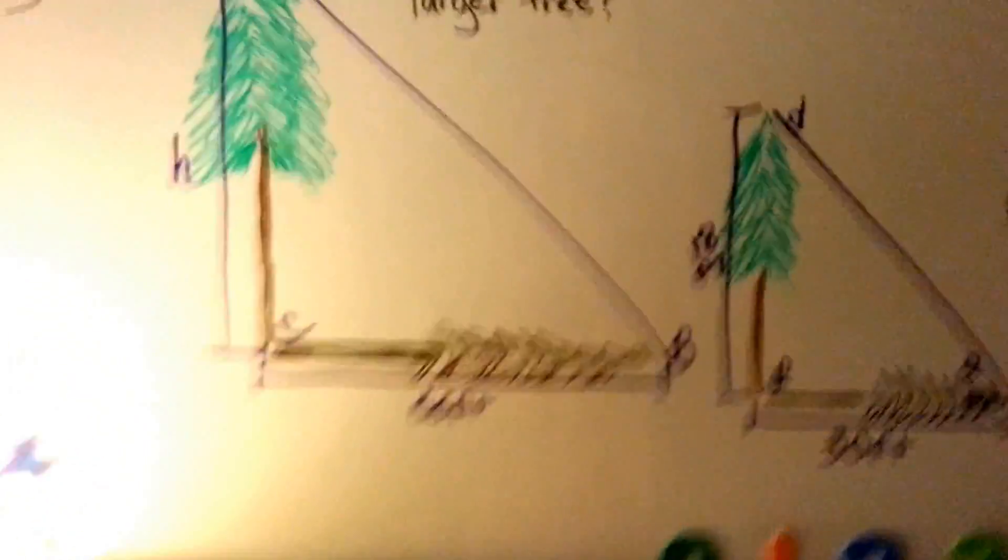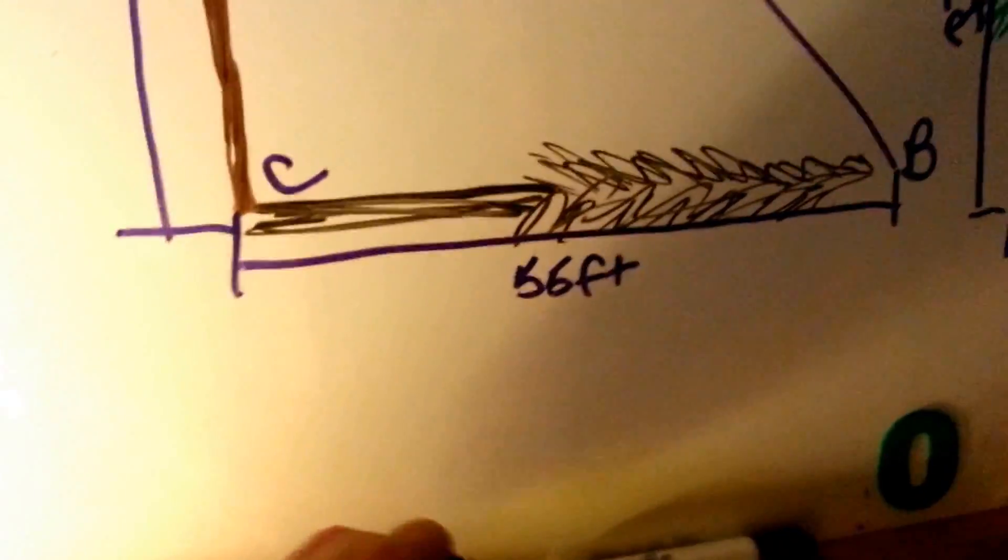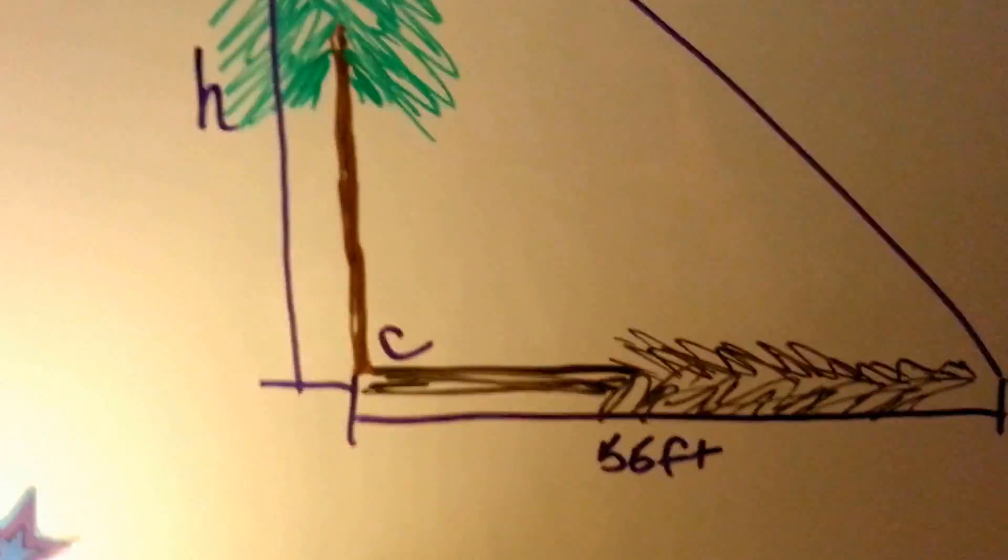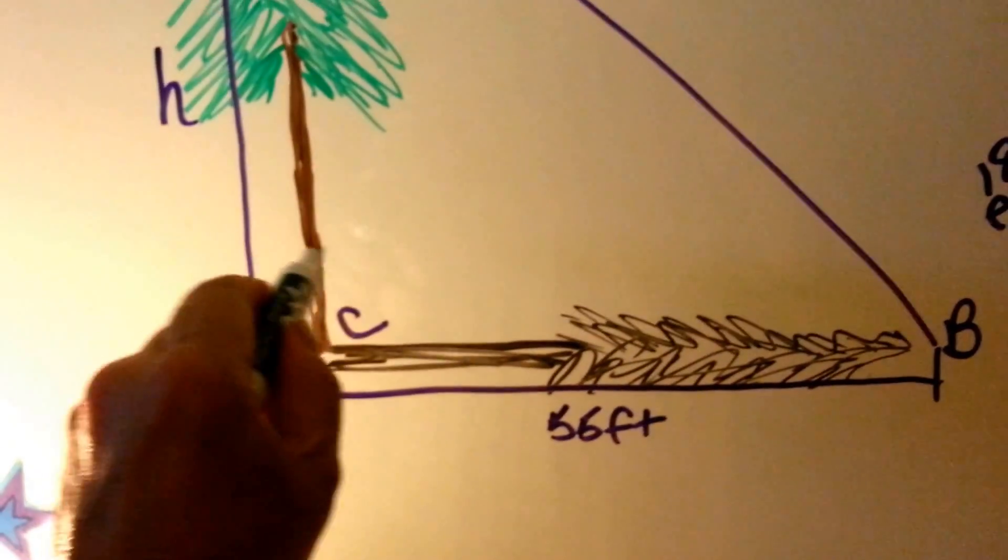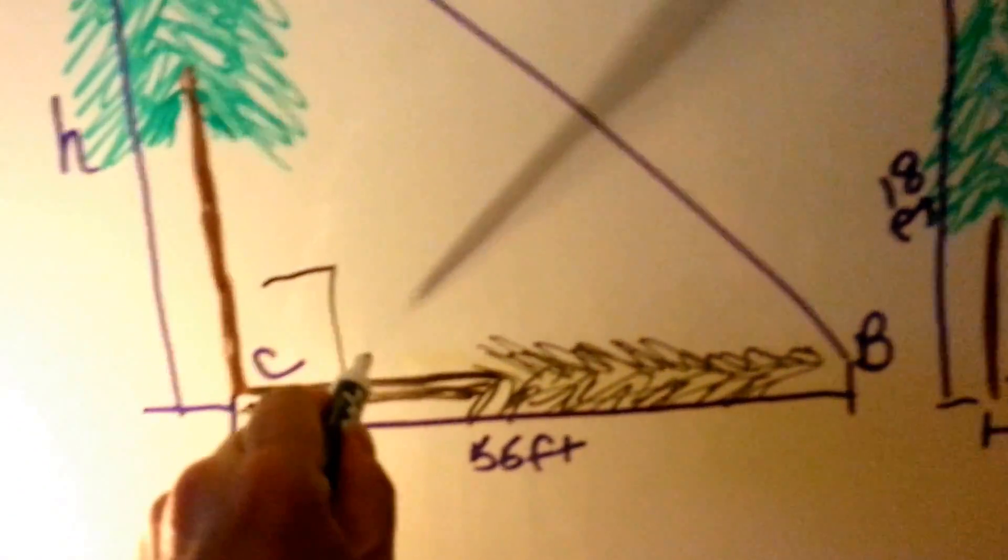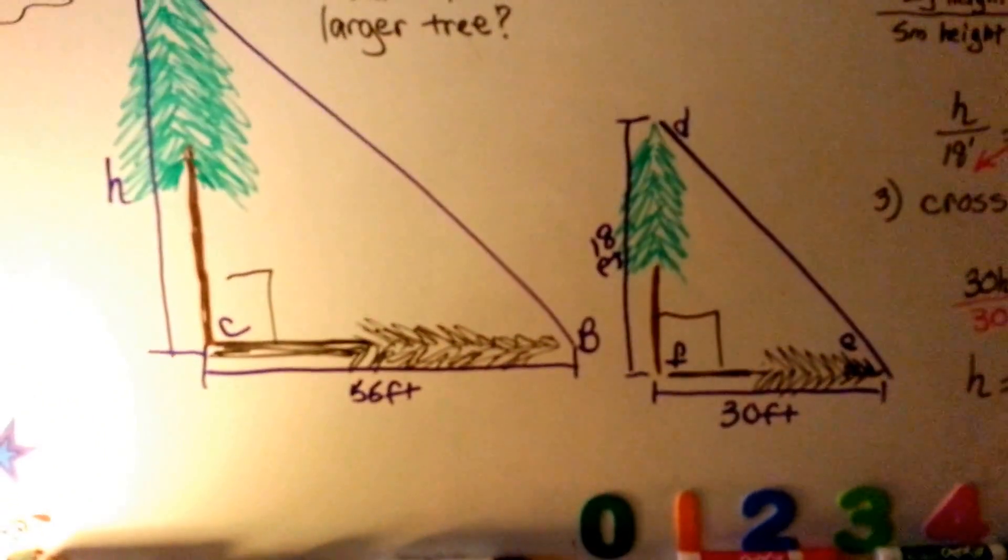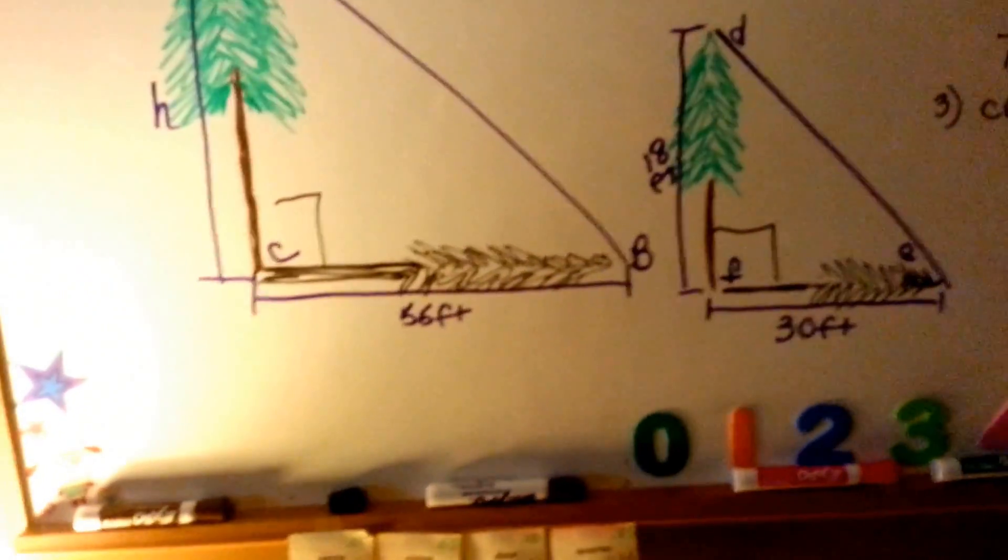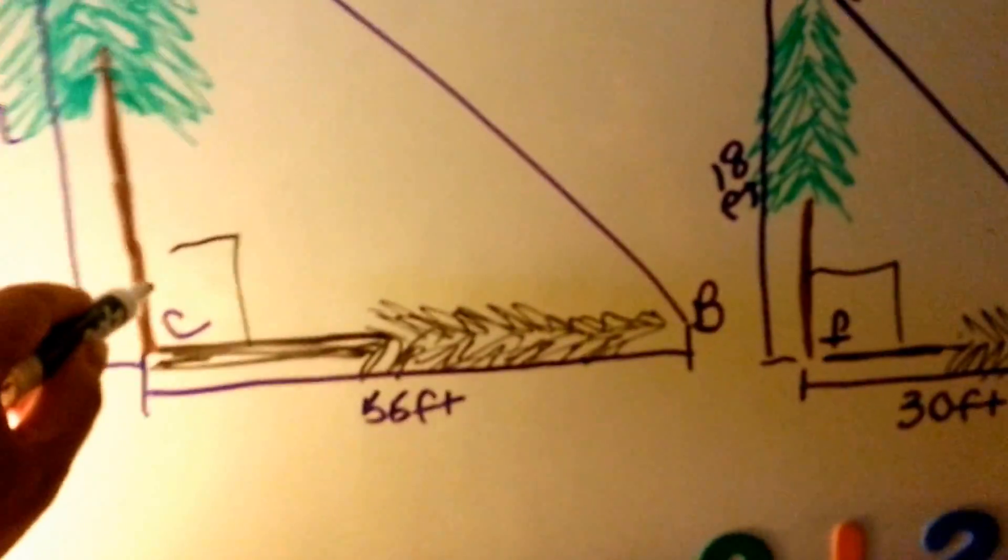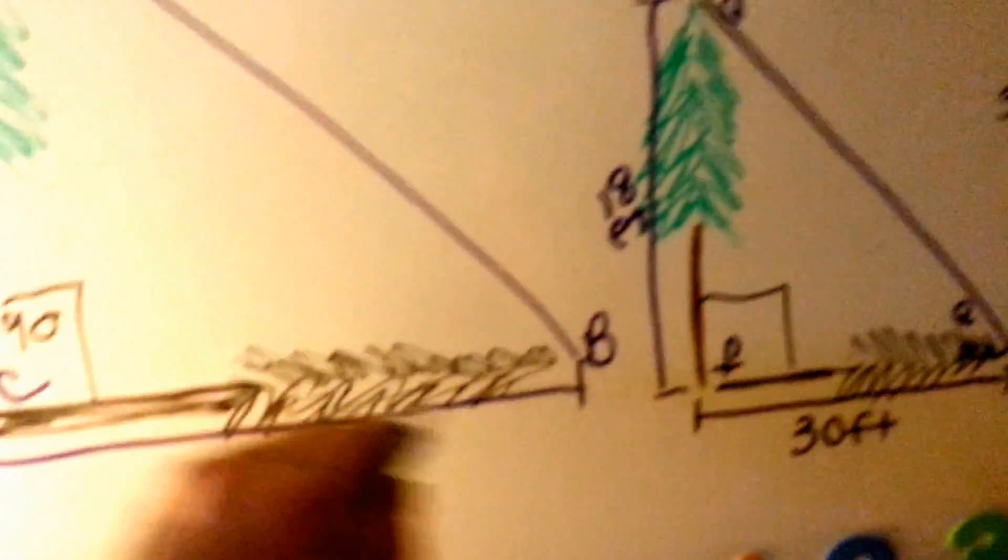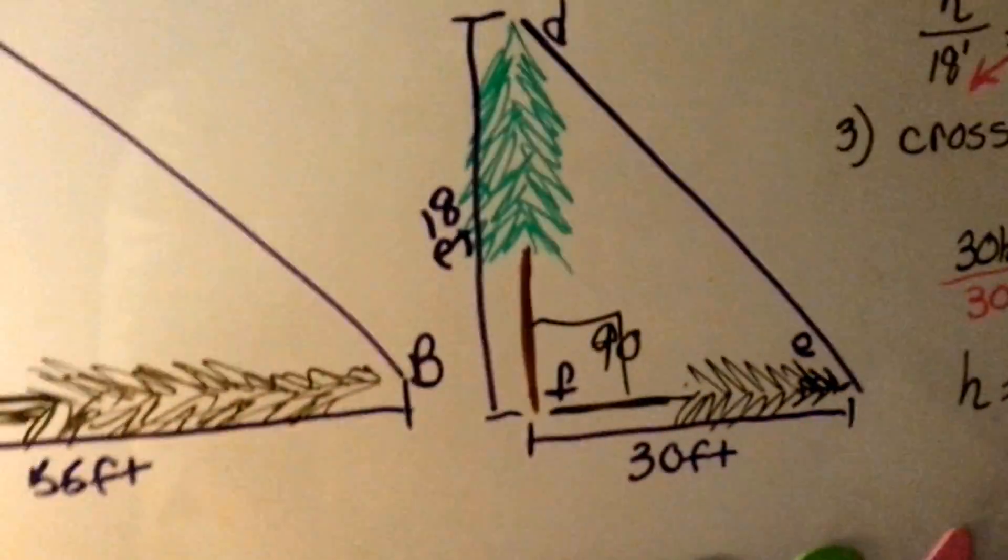Now, if you notice, right here, let me grab a marker. If you notice right here and right here are 90 degree angles. So that tells us we already have a measure for some of the angles. We know they're 90.